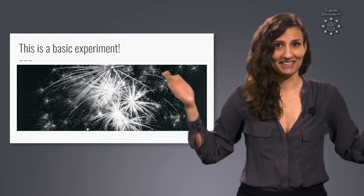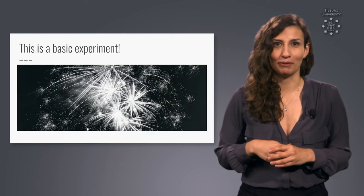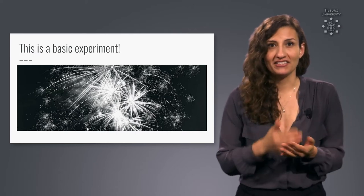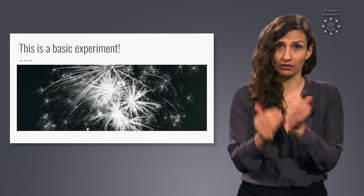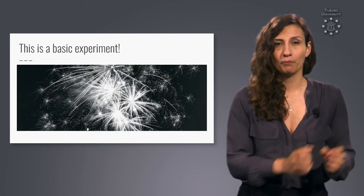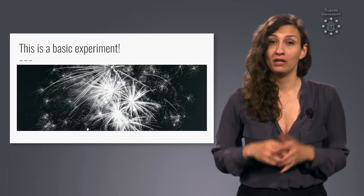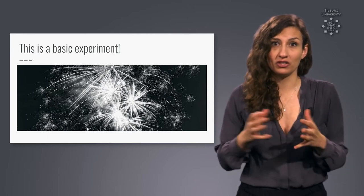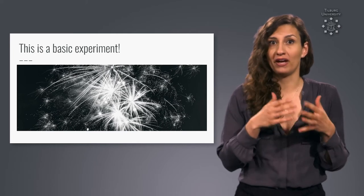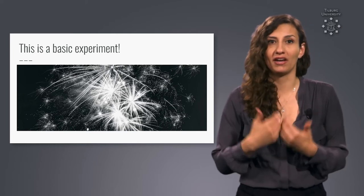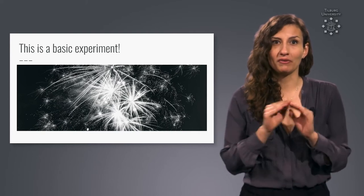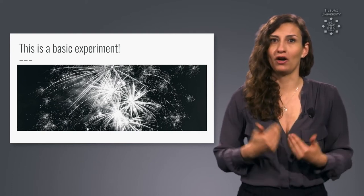Hooray! This is a basic experiment. The basic feature of an experiment is that it deliberately contrasts different observations. In our case, there is one control group and one experimental group. There could also be circumstances in which there are several experimental groups, such as when you want to try out which dosage of our carrot pill is the most efficient. But for now, working with this simple design suffices.